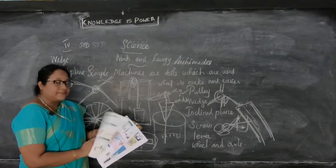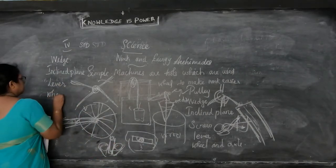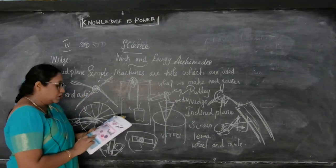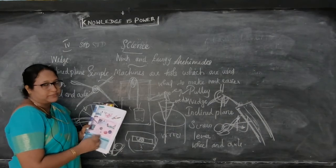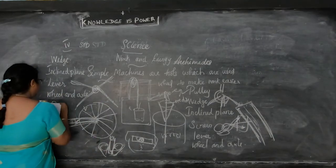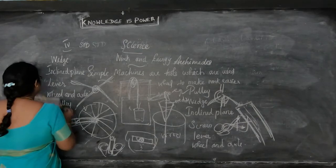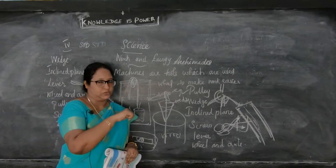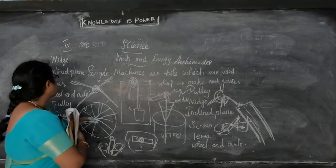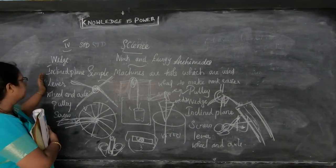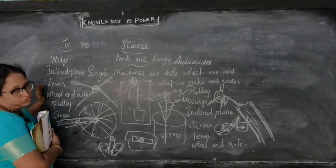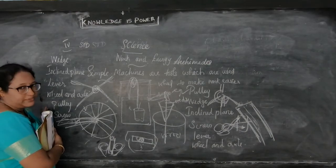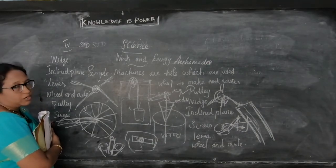Next picture shows wheel and axle. Then there is a pulley — that is drawing water from a well. And the water bottle cap — that is a screw. So: first is wedge, second is inclined plane, third is lever, fourth is wheel and axle, fifth is pulley, sixth is screw.